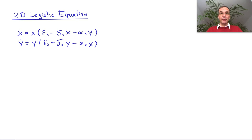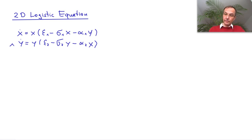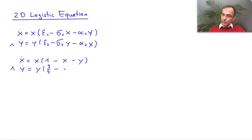Or also, if the other species is a predator, then the more of the other species you have, the more your growth is limited. Now the concrete version I want to discuss here is the following. Here I have chosen simple values for epsilon 1, epsilon 2, sigma 1 and 2, and alpha 1 and 2.